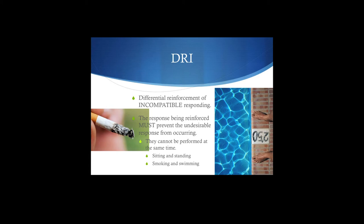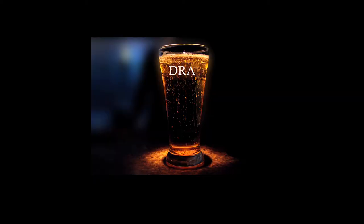Differential reinforcement of incompatible behavior: when you've got a behavior happening — either in yourself or with a child — that you do not want, find a behavior to replace it with. The smoking is automatically reinforced by the nicotine, so we're going to try to reinforce something else at a rate that will eventually replace the smoking. It's pretty cool stuff for the classroom — a little harder to use DRI outside of the classroom — but it's definitely a useful procedure.